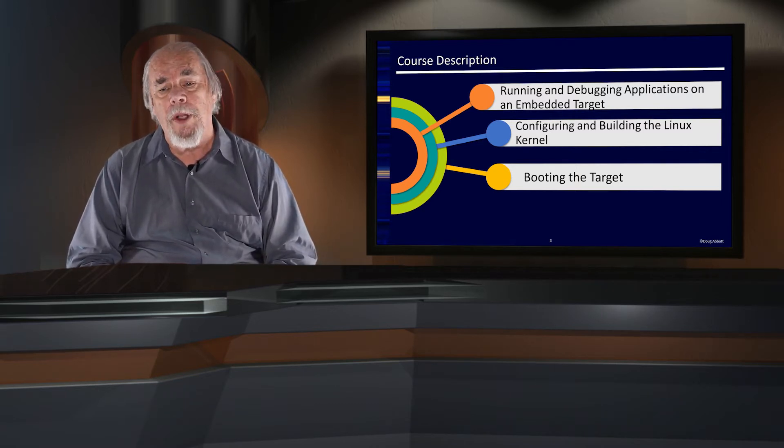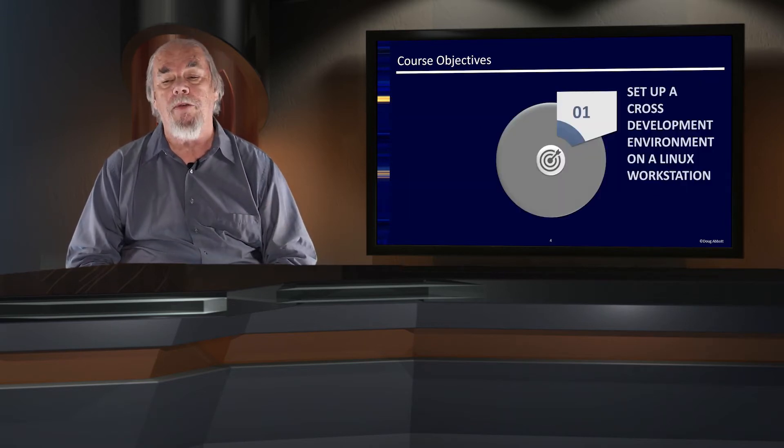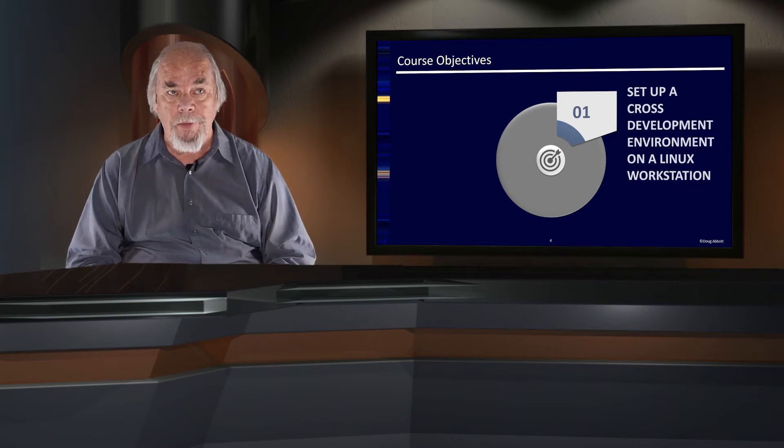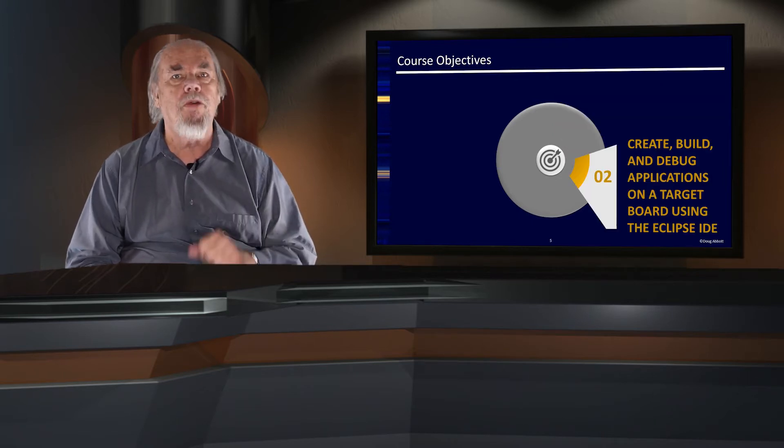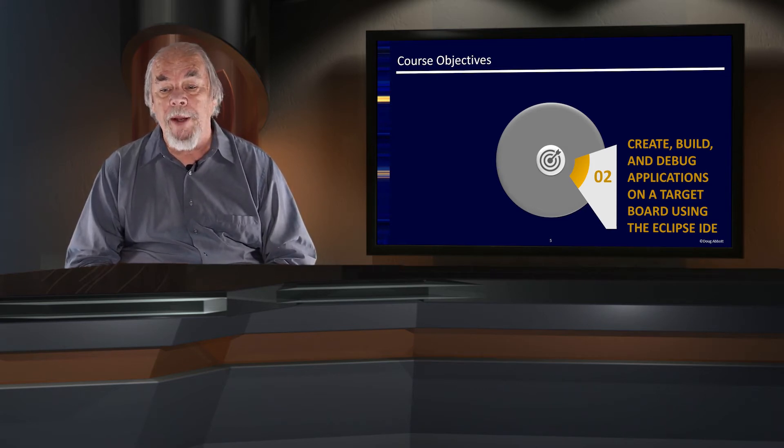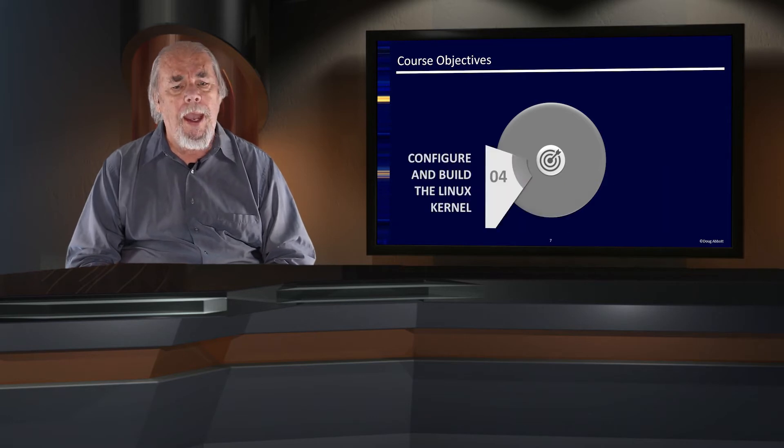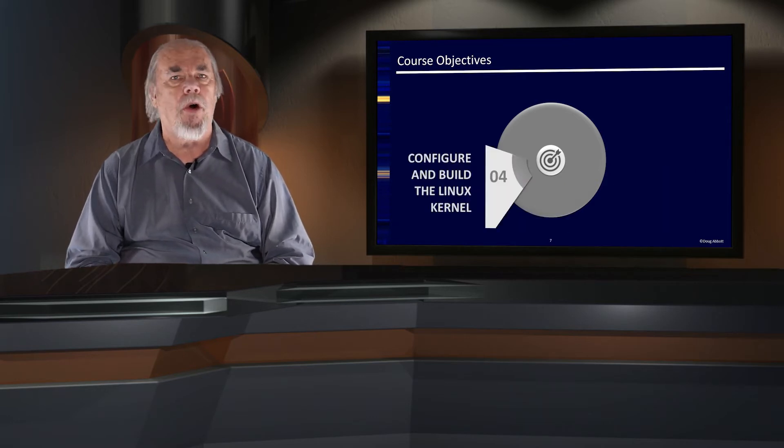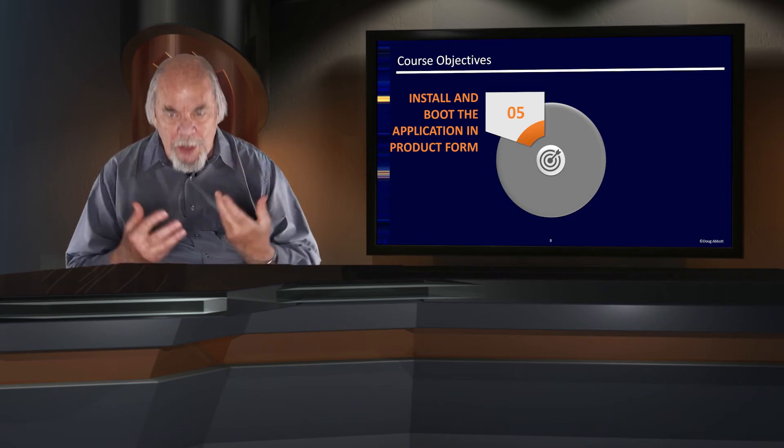Okay, so let's look at the objectives in a little more detail. We'll set up a cross-development environment on a Linux workstation. We will create, build, and debug applications for the ARM target board using the Eclipse integrated development environment. We will write multi-threaded and networked applications. We'll configure and build the Linux kernel. And finally, we will install and boot our application program on a real product form.